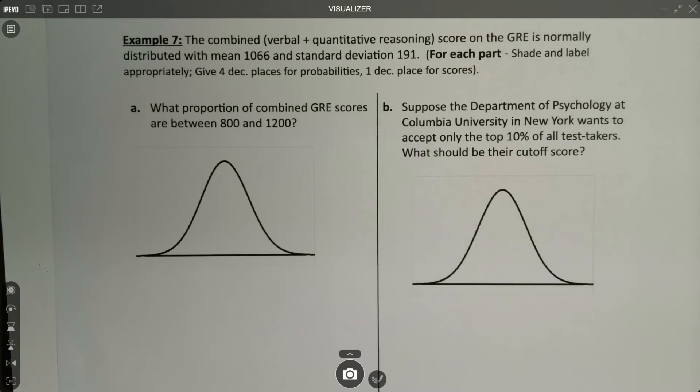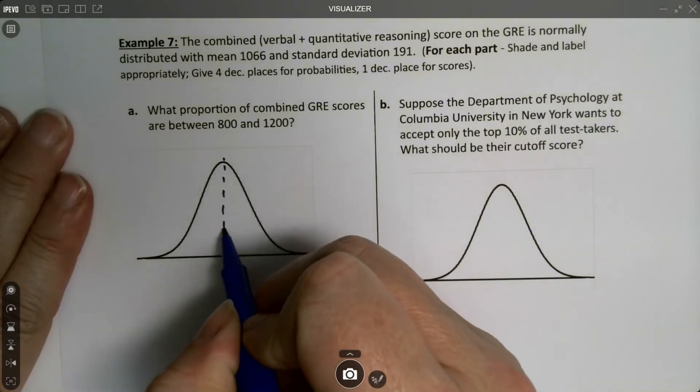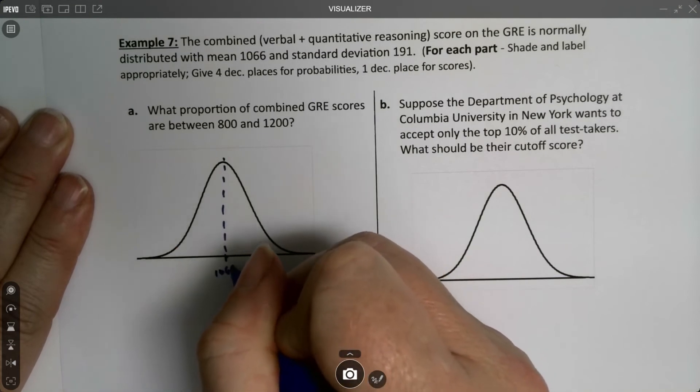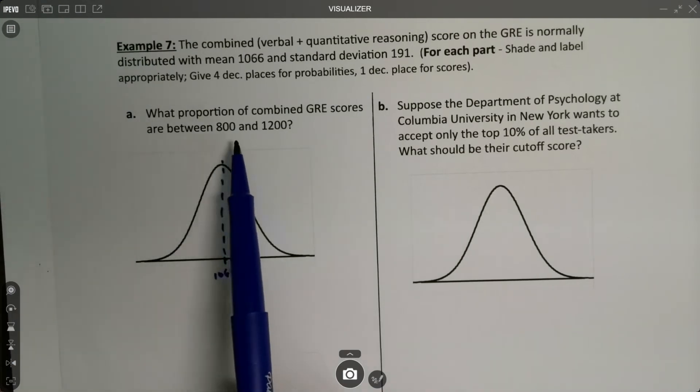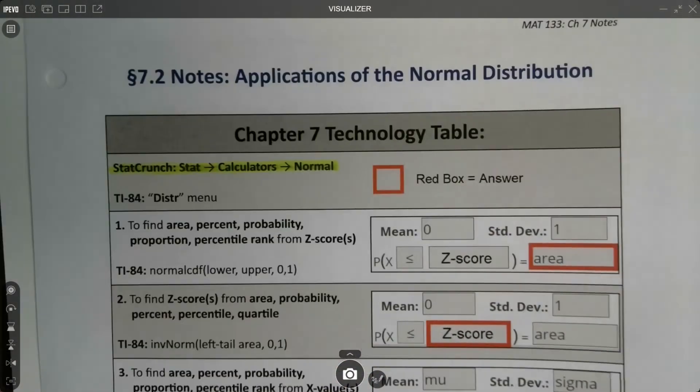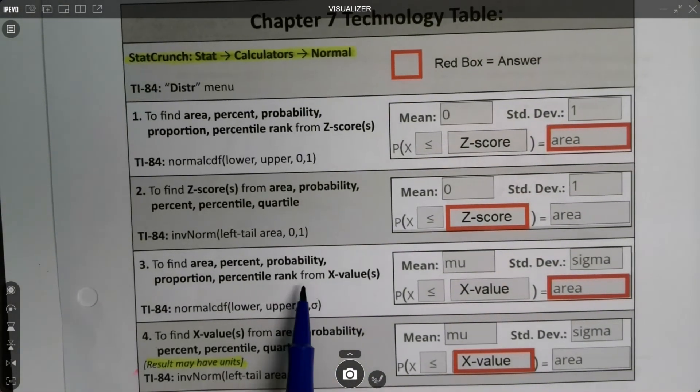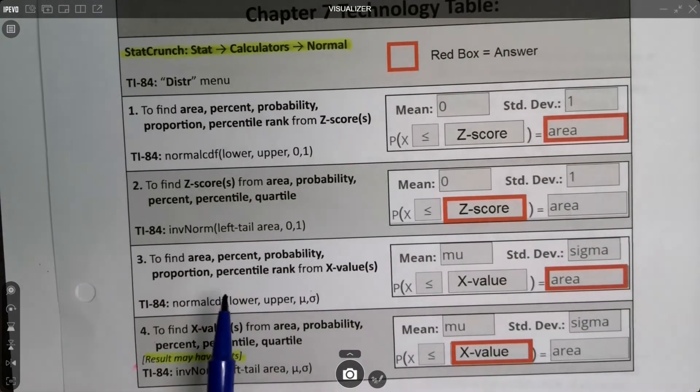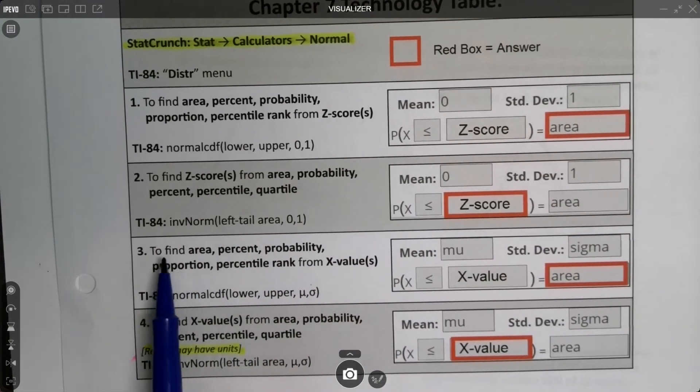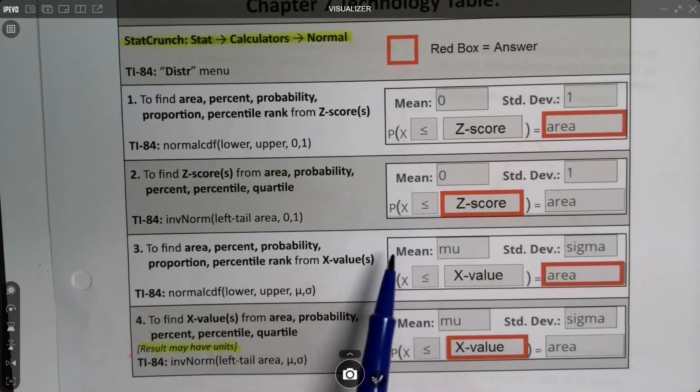What proportion of combined GRE scores are between 800 and 1200? Alright, I know that the middle is 1066. I could put that in all of these graphs for starters. Now it's telling me the scores 800 and 1200. It's giving me the X values. I'm looking for the proportion. That's my question word. So I want to find the proportion. I'm doing number three right here.